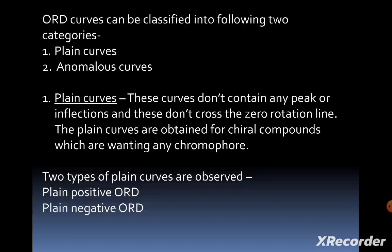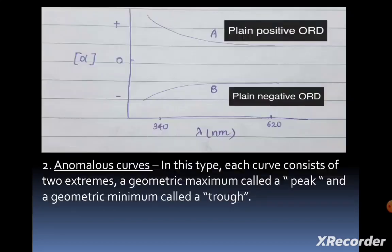Two types of plain curves are observed: plain positive ORD and plain negative ORD. Here is the diagram showing the plain positive ORD and plain negative ORD.